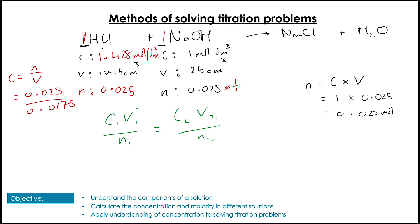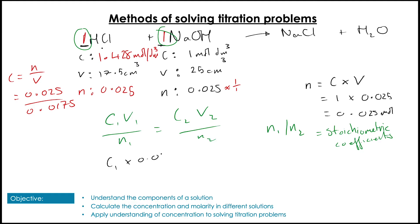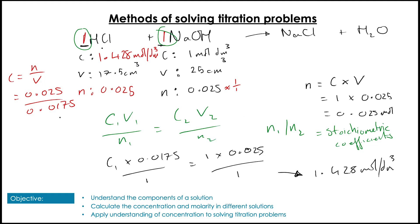We can also use the relationship C₁V₁/N₁ = C₂V₂/N₂, where N₁ and N₂ are the stoichiometric coefficients of each species respectively. Plugging in the values for HCl as C₁ with N = 1 and NaOH with N = 1, when we rearrange, we get 1.428 mol/dm³ — the same answer. You can use either method; the second is quicker, but the first gives more practice converting to moles and understanding reaction relationships.